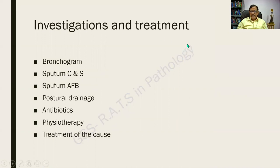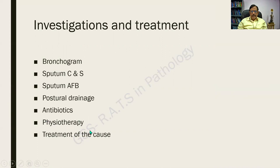Investigations include: sputum for culture and sensitivity, and acid-fast stain for tubercle bacilli. Regarding treatment: postural drainage is one of the best modes — for lower lobe bronchiectasis, raise the foot end of the bed; for right-sided bronchiectasis, the patient lies in left lateral position. Appropriate antibiotics and physiotherapy are given. Crucially, the underlying cause must be treated — tumor or tuberculosis accordingly.